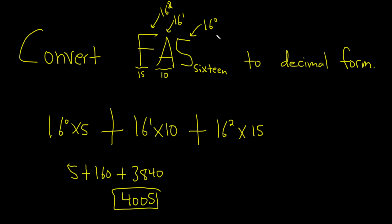And that's it. So just multiply each one by 16 to the 0, 16 to the 1, 16 squared. And then you just have to know that A is 10 and F is 15, and it works out.